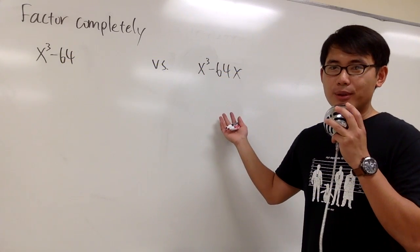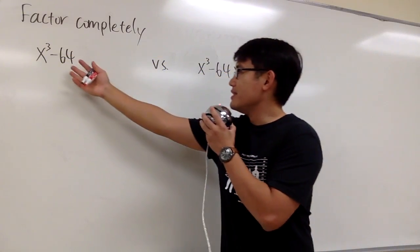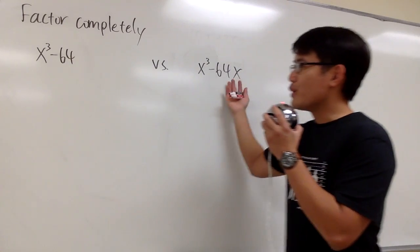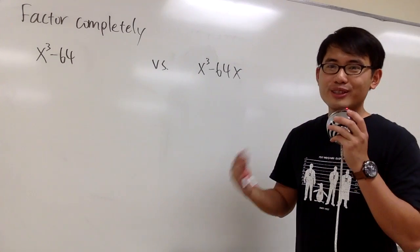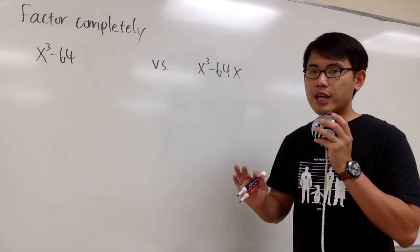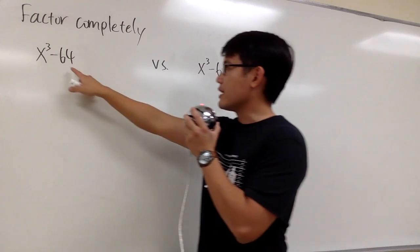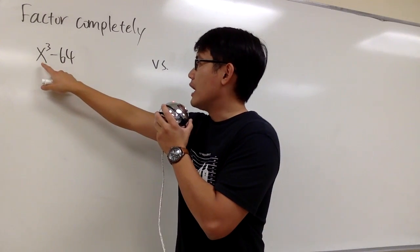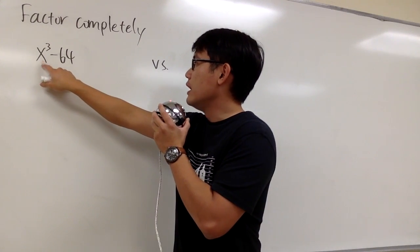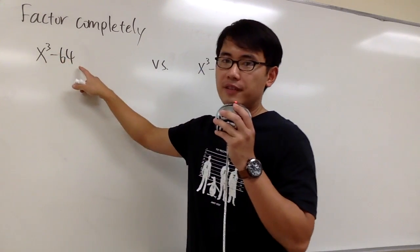I'm going to show you guys these two examples in this video, because as you can see, these two equations look so similar, but the way to factor them are different. Let's focus on the first one — we have to factor x to the third power minus 64.